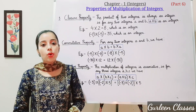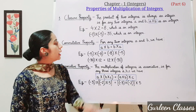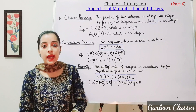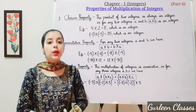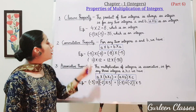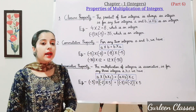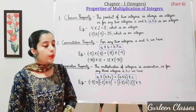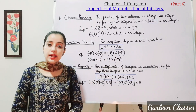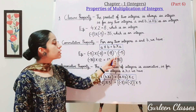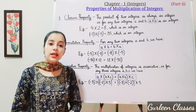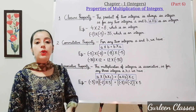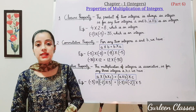Property number 2: commutative property of multiplication. For any two integers a and b, we have a into b is equal to b into a. Example: minus 5 into minus 8, where minus 5 is a and minus 8 is b; and minus 8 into minus 5, where minus 8 is b and minus 5 is a. So a into b is equal to b into a.